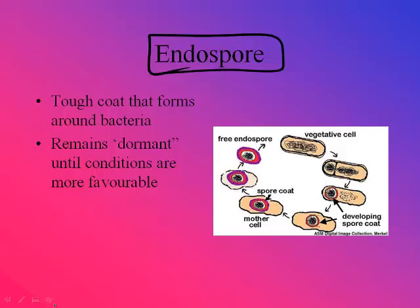Endospores: a tough coat can form around the bacterium. If bad conditions arise, this tough outer coat surrounds the DNA, everything else breaks down, and all you have left is this tough outer coat around the DNA. It remains dormant — kind of sleeping — until more favorable conditions arise, and then it can start growing again.